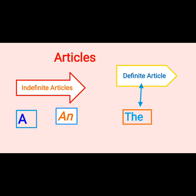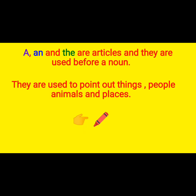A and an are indefinite articles. The is a definite article, and together a, an, and the make up articles. A, an, and the are articles — they are used before a noun. We normally use these three words before a noun.